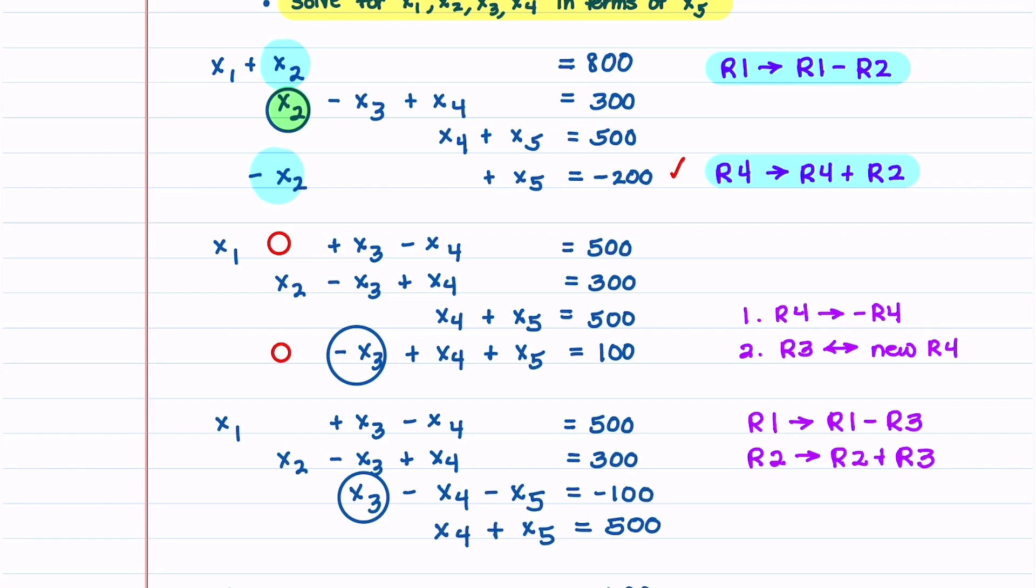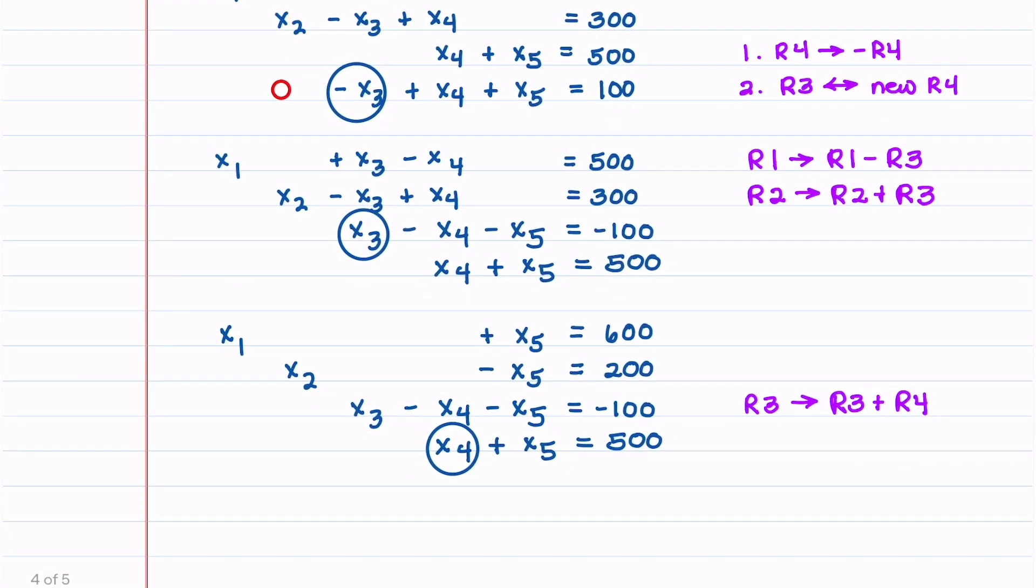You can see that the x2 from equation 1 and from equation 4 went away. We're going to do the same type thing to only get x3 in equation 3 and x4 in equation 4. In my next series of videos we're going to go through this more slowly.